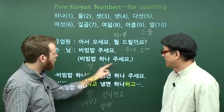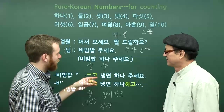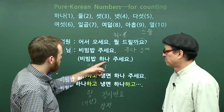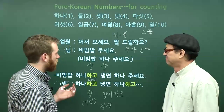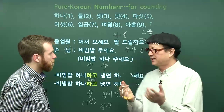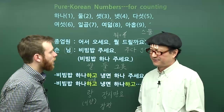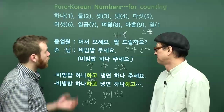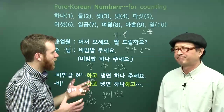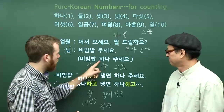If I say 비빔밥 하나 주세요, we don't always just say 하나 주세요. We can also say 한 개 주세요. 비빔밥 comes in a big bowl — 그릇 means a container or bowl. So you might hear someone say 비빔밥 한 그릇 주세요. These counter words are very important in Korean. For numbers one to four, we knock off the last letter: 한 그릇, 두 그릇, 세 그릇, 네 그릇.